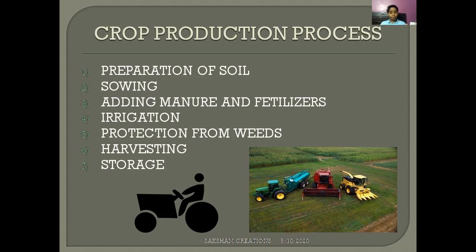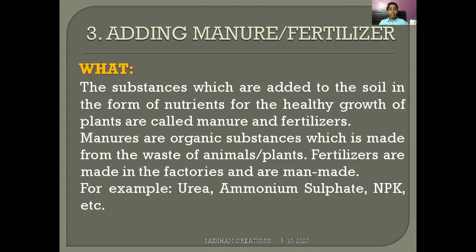What are manure and fertilizers? The substances which are added to the soil in the form of nutrients for the healthy growth of plants are called manure and fertilizers. Manures are organic substances made from the waste of animals and plants, like cows and buffaloes. Fertilizers are made in factories and are man-made; they are also called inorganic. For example: urea, ammonium sulfate, and NPK.